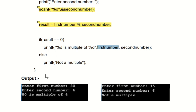Like enter the first number and for example you have entered 80 and then enter the second number for example you have entered 4, so obviously 80 is multiple of 4, so that is valid.